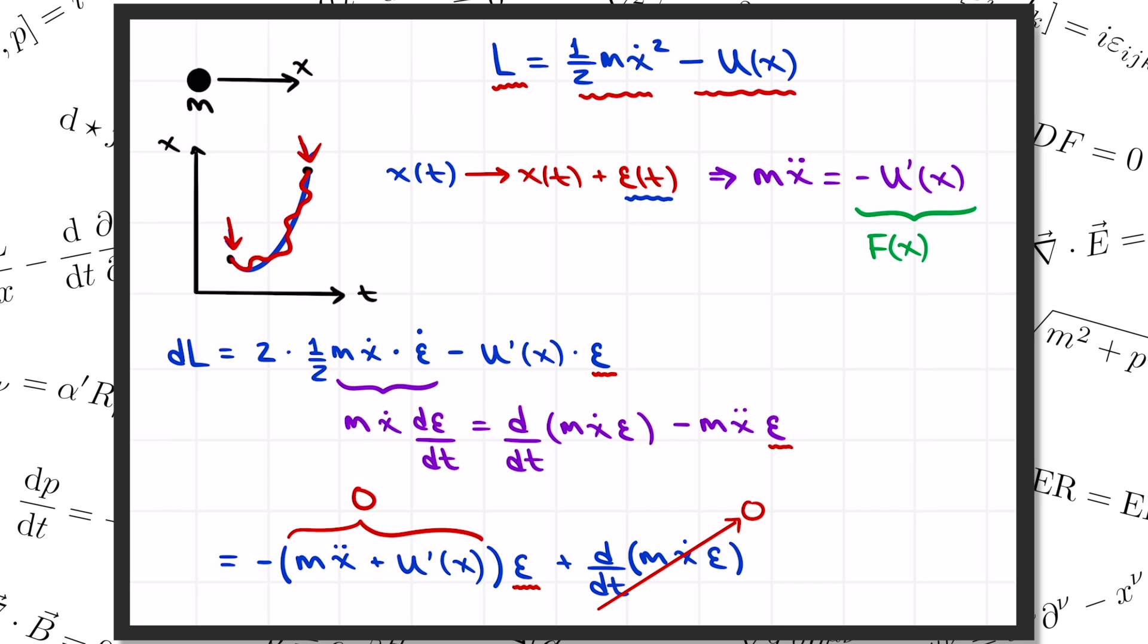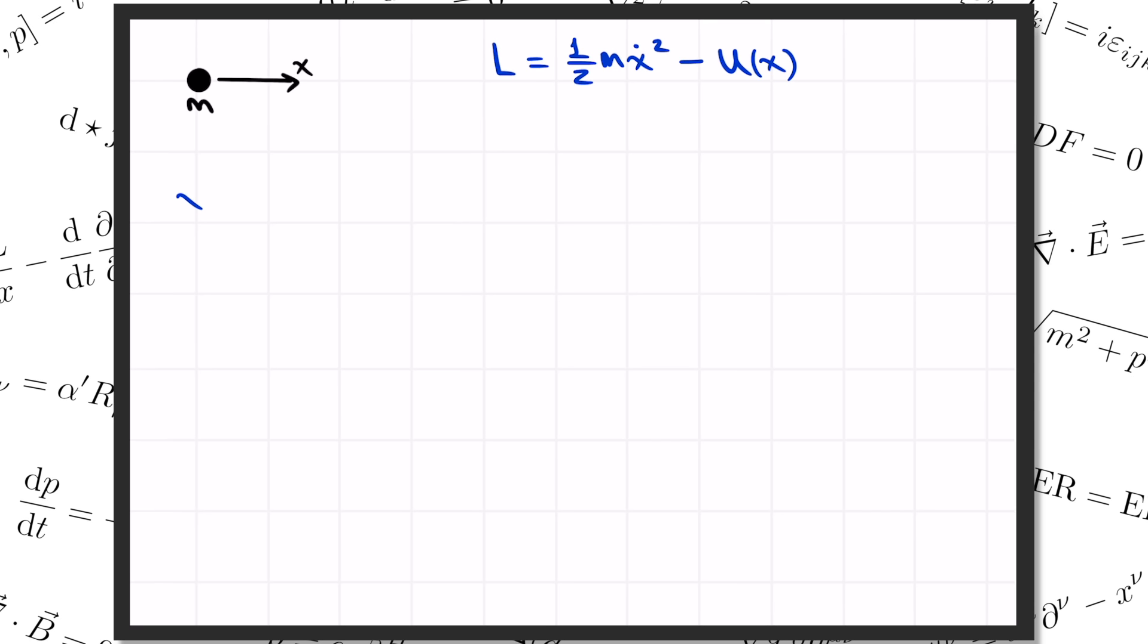But, our formula for the change in the Lagrangian is more general than that. We'd had in mind a deformation here by epsilon of t, where epsilon is an infinitesimal function that vanishes at the starting and ending times. But, we didn't actually make any assumptions when we computed the change in the Lagrangian, other than epsilon being infinitesimal. Epsilon could have been any function in that formula, even a function of x itself. So, to avoid confusion with a special case we had in mind for the principle of least action, let me rewrite the transformation as x goes to x plus eta, where eta can be any infinitesimal function of t and/or x. Then, the same argument shows that the change in the Lagrangian is going to be dL equals minus the equation of motion times eta plus d by dt of m x dot times eta. By EOM here, I mean the thing that vanishes when x is the physical trajectory, m x double dot plus u prime.